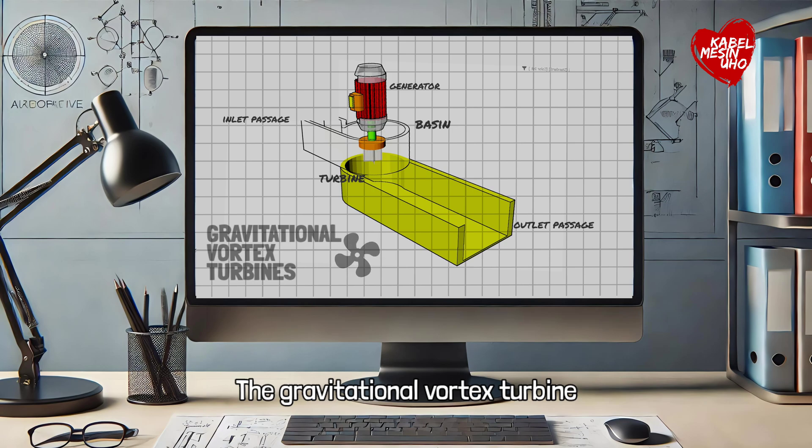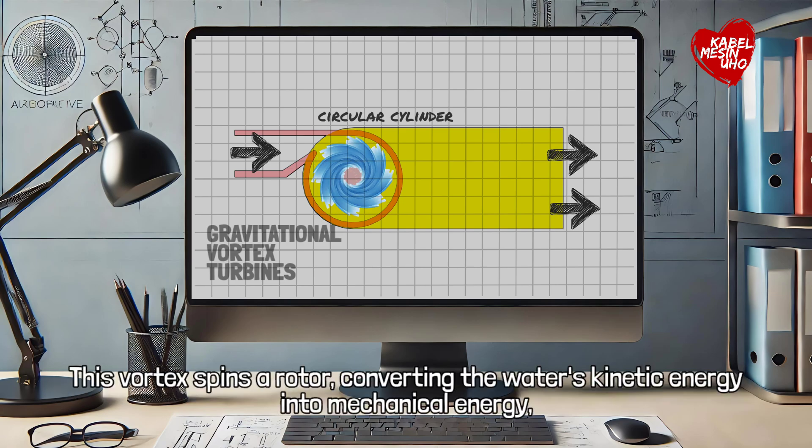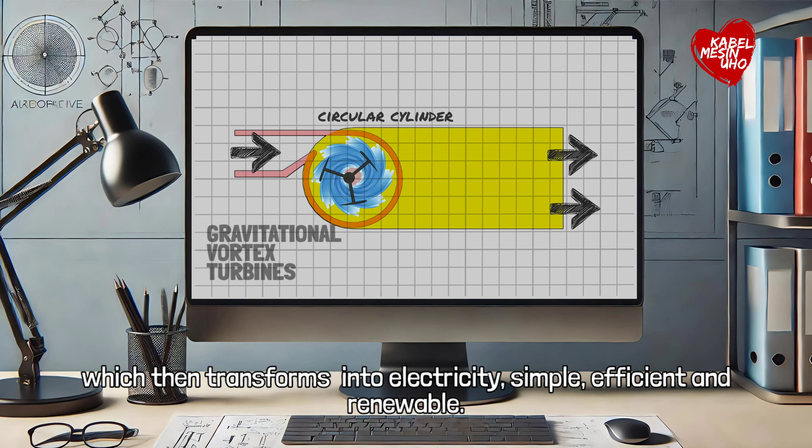The gravitational vortex turbine channels water into a circular chamber, creating a rotating vortex. This vortex spins a rotor, converting the water's kinetic energy into mechanical energy, which is then transformed into electricity. Simple, efficient, and renewable.